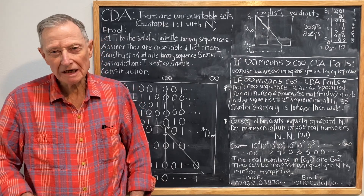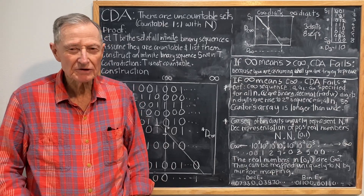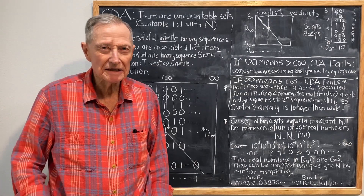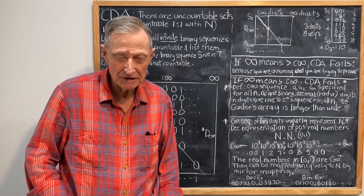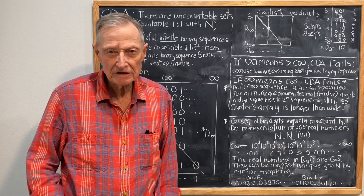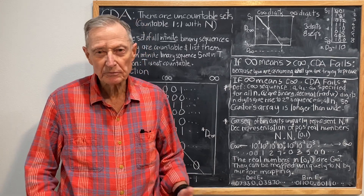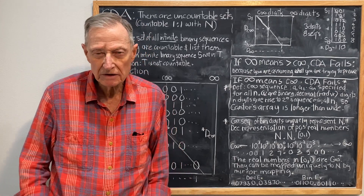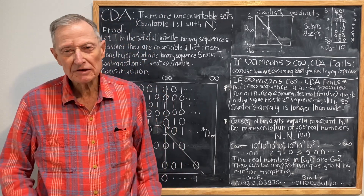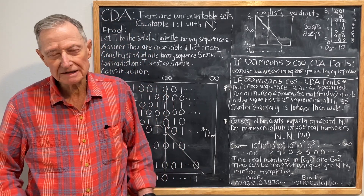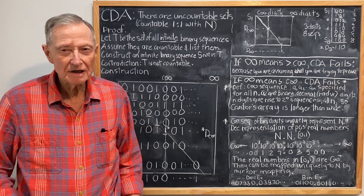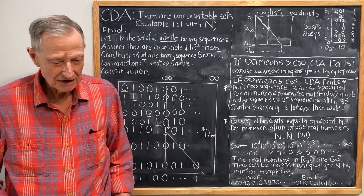In this video, I'm going to show Cantor's Diagonal Argument fails, which is an update of a previous video, and I'm also going to show that the real numbers are countable.